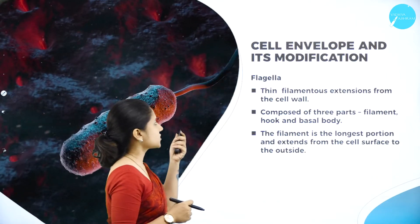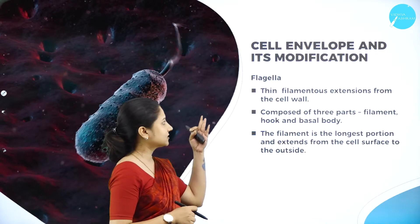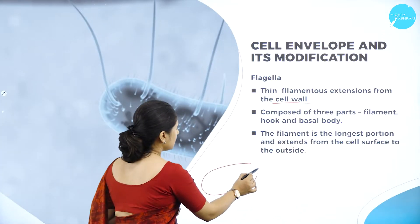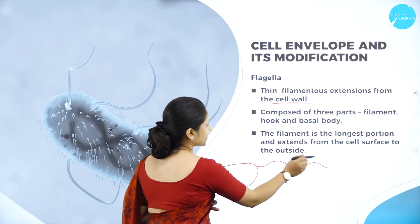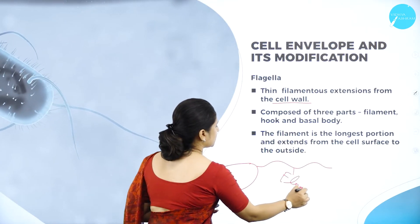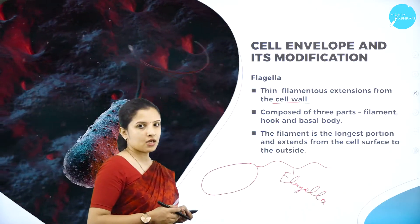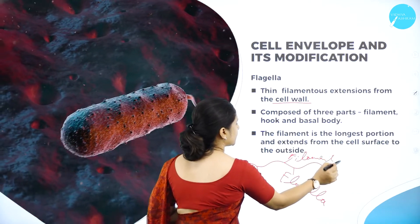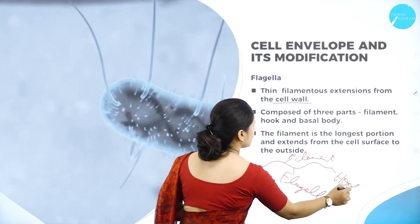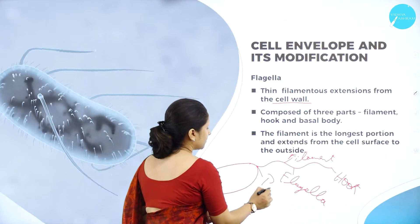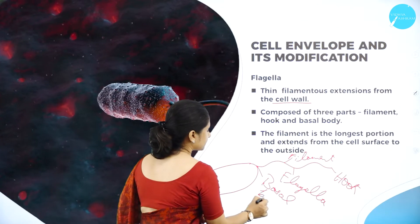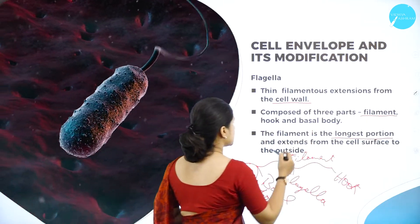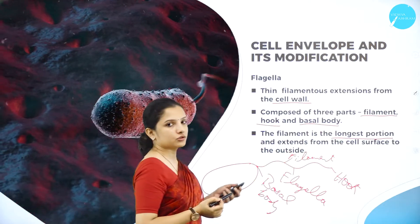Another modification is the flagella — filamentous structures that arise from the cell wall and help in the movement of the bacteria. Flagella are composed of three parts: the filament, which is the longest part; the hook at the tip of the filament; and the basal body, which connects to the cell wall.